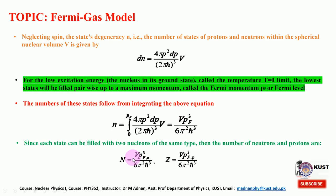Since each state can be filled with two nucleons of the same type, the number of neutrons and protons are written separately as N and Z. Writing these expressions for neutrons and protons separately, these results arise from the description of the Fermi-Dirac model. We need these two expressions for the proton and neutron in those energy states.